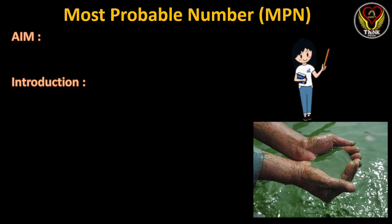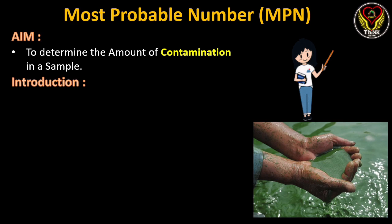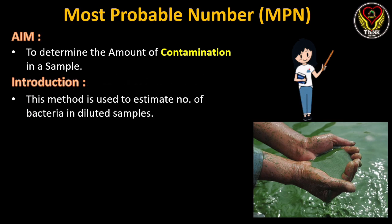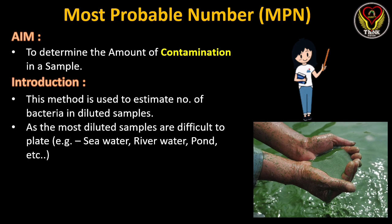Hello friends, in this video we are going to see about one of the most important techniques in environmental microbiology — the Most Probable Number technique, or MPN test. This method is used to determine the amount of contamination in a sample, especially water samples used for drinking purposes. It is used to estimate the number of bacteria in diluted samples such as water from rivers, ponds, and lakes.